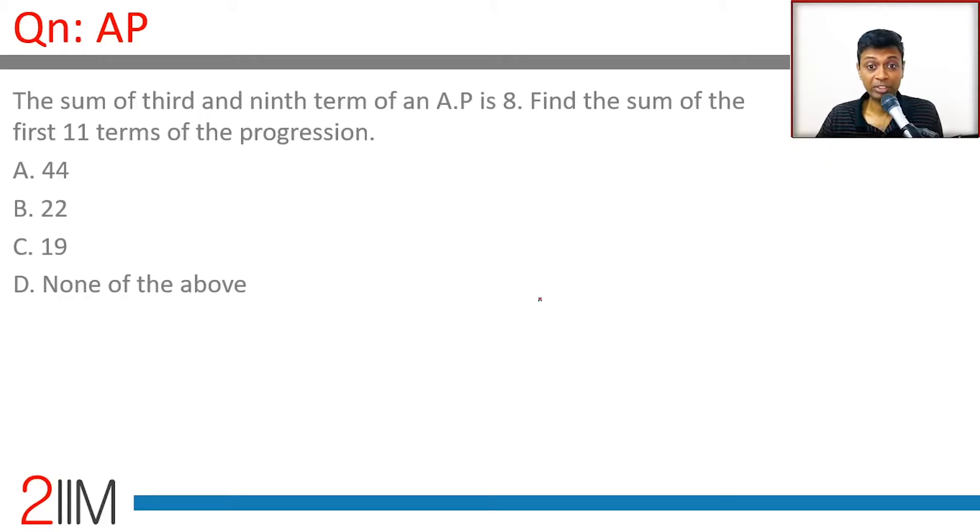The sum of the third and ninth terms of an AP is 8. T3 plus T9 equals 8. These two add up to 8.